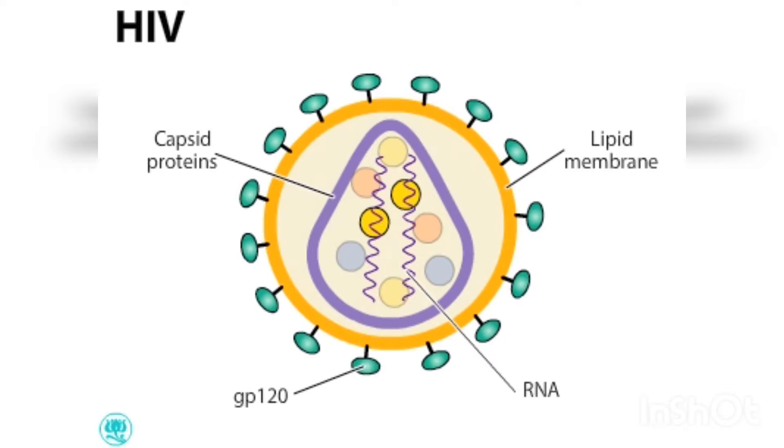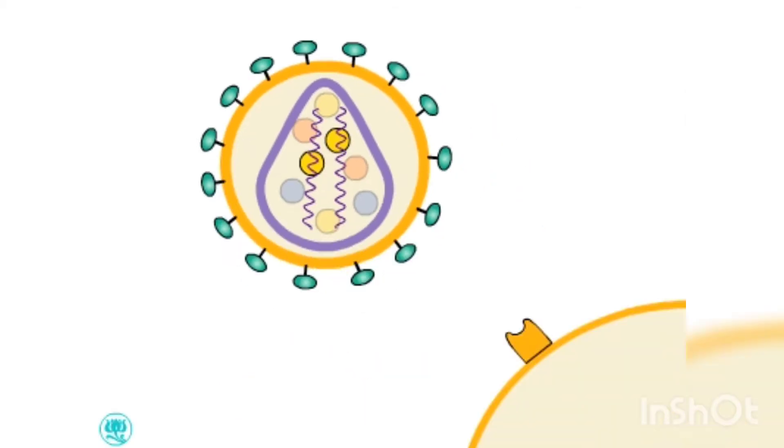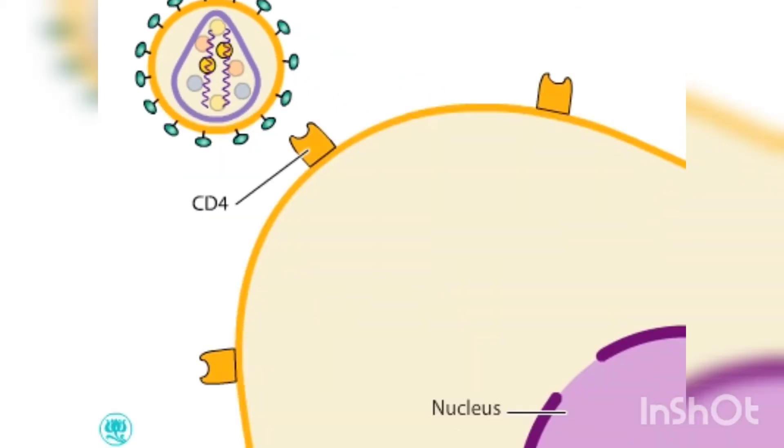HIV has surface proteins called GP120 that attach to cells that have CD4 receptors on their surfaces. CD4 is found on the immune system's helper T lymphocytes and on scavenger cells called macrophages.